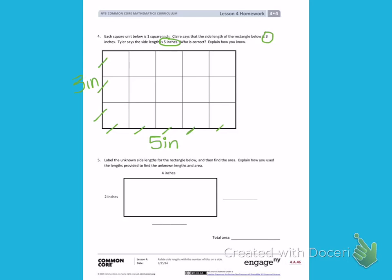Who is correct? Well, I can see both of their answers in the problem, so I would say both are correct. You need to write who is correct, and you also need to use words to explain how you know. When you are done, you can move on to number 5.